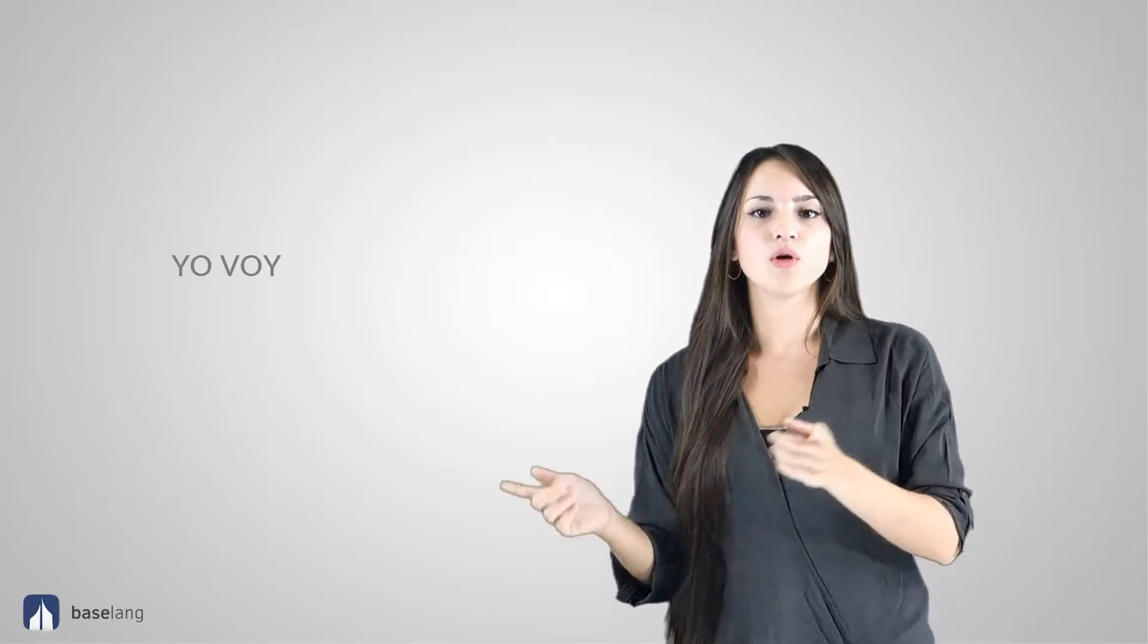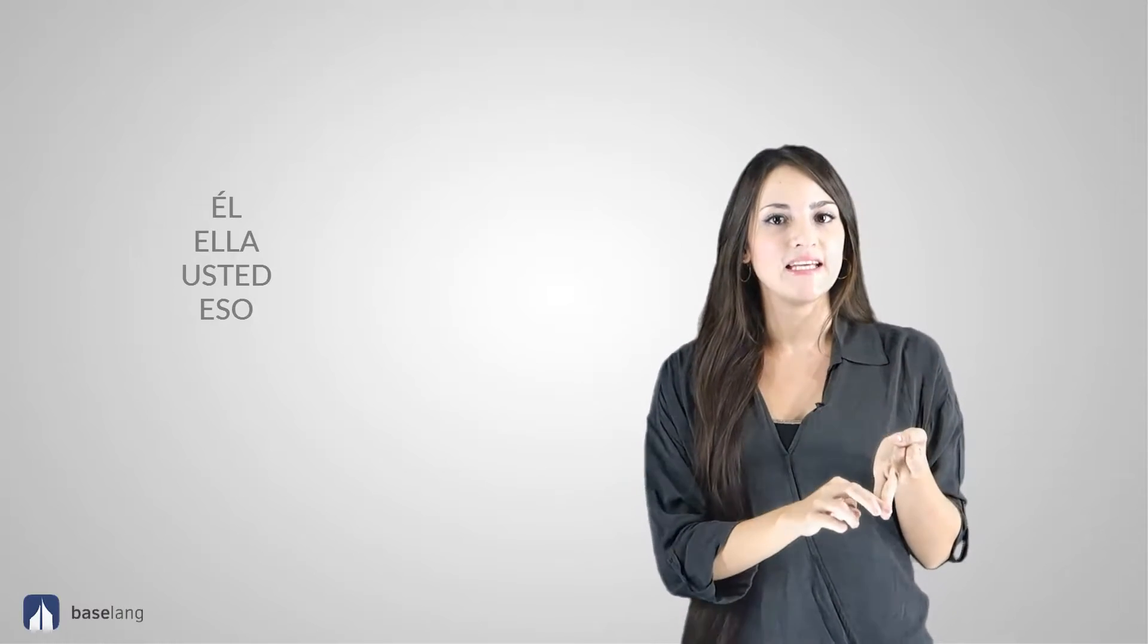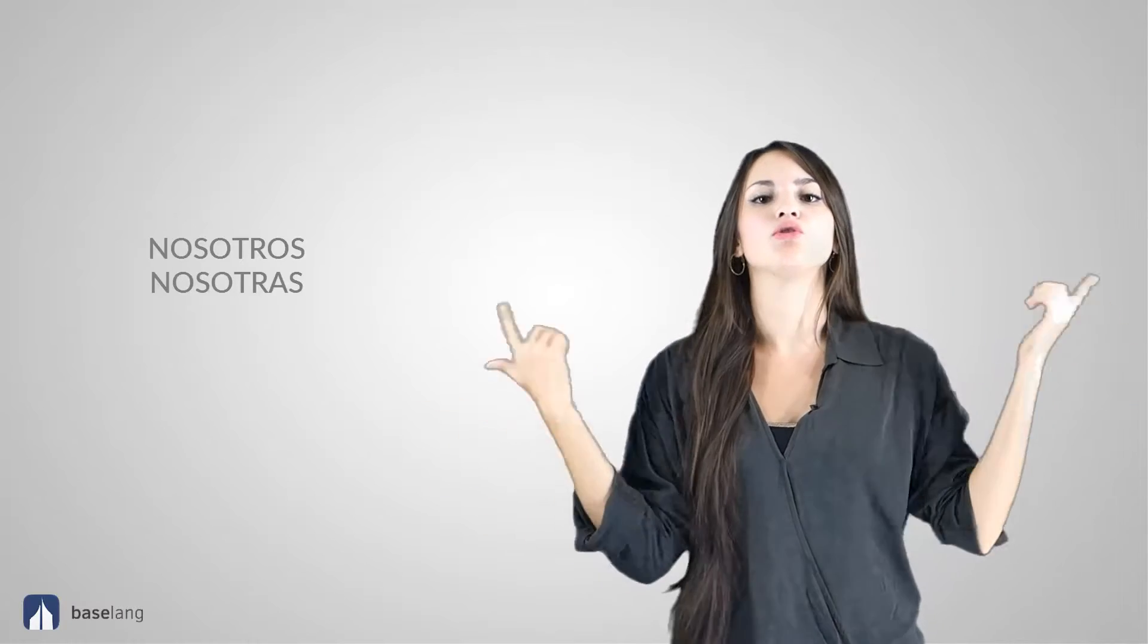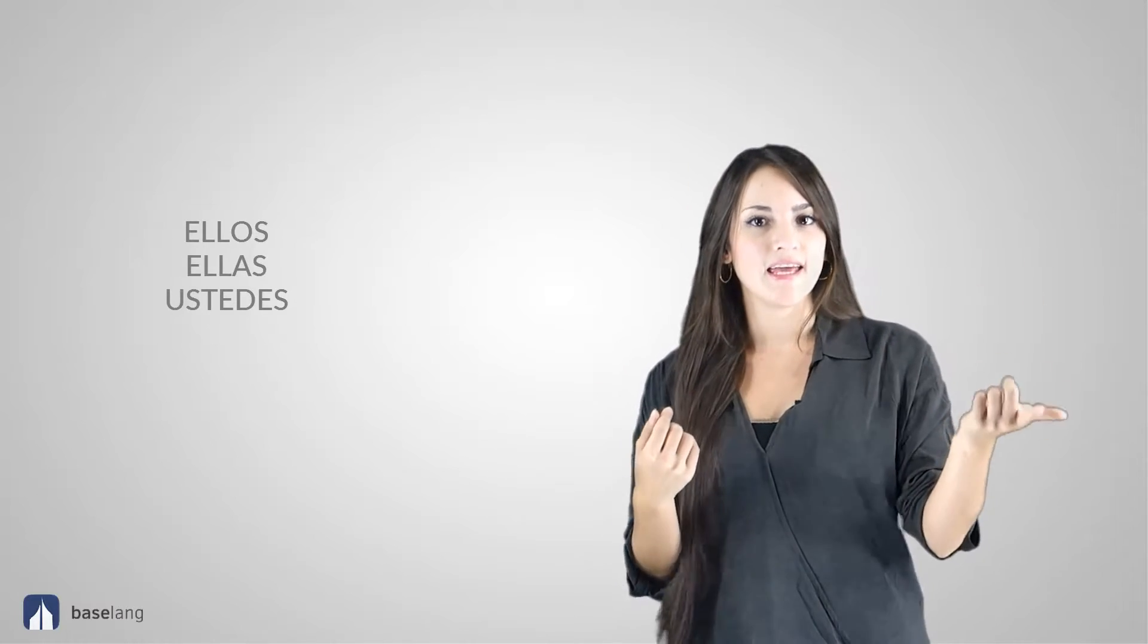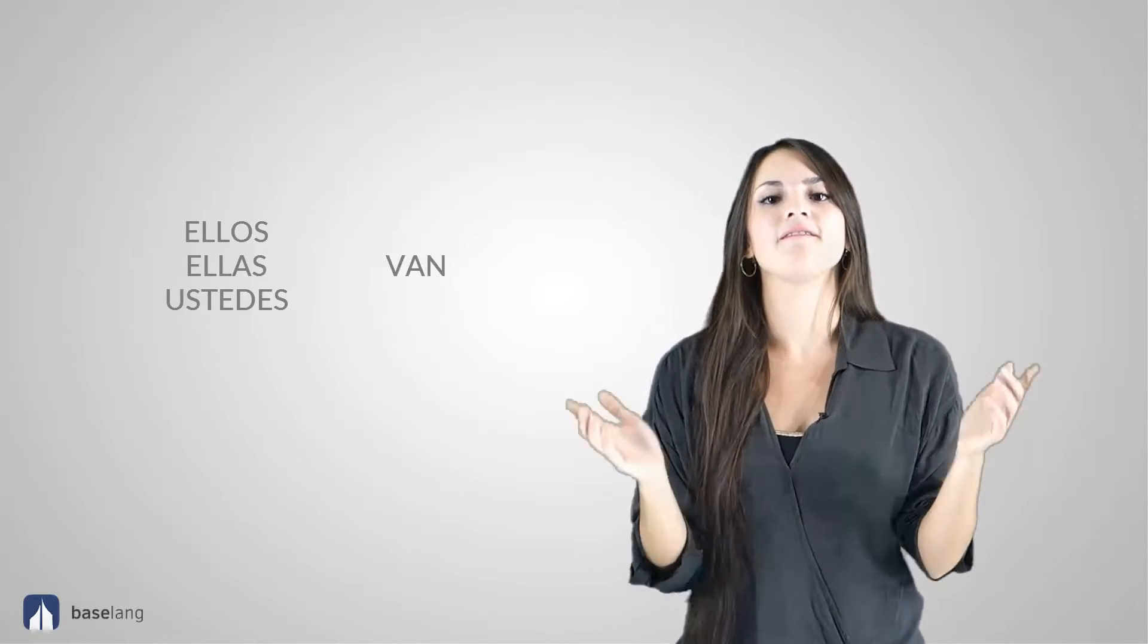Before we start, we're going to see the conjugation of the verb ir, to go, in English because going to is the basic for everything in the future tense. Let's see: yo voy, tú vas, él, ella, usted, eso va, nosotros, nosotras vamos, ellos, ellas, ustedes van.